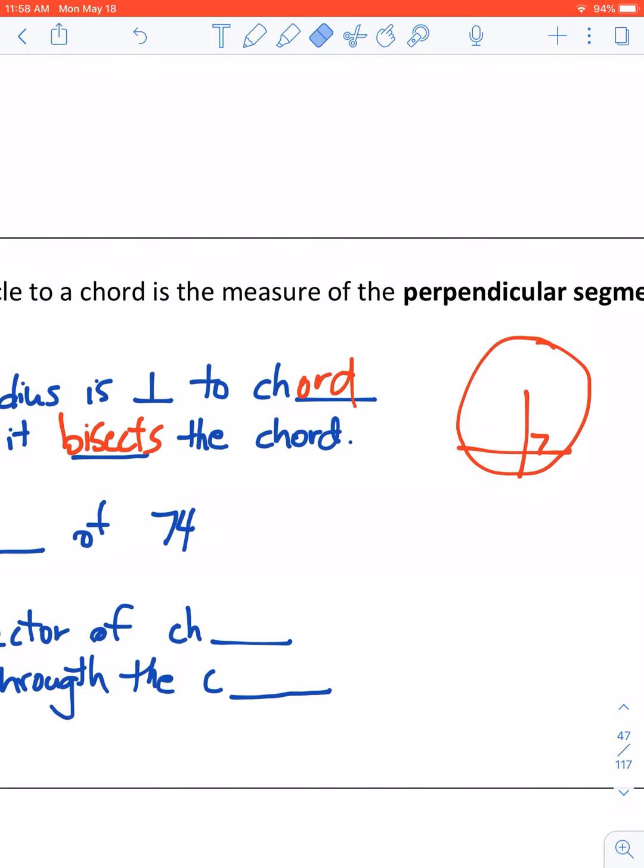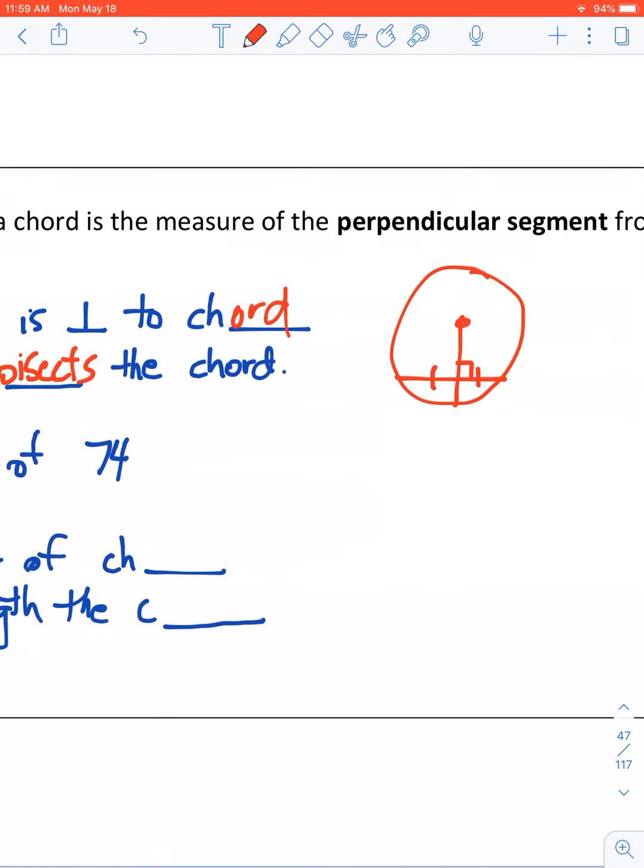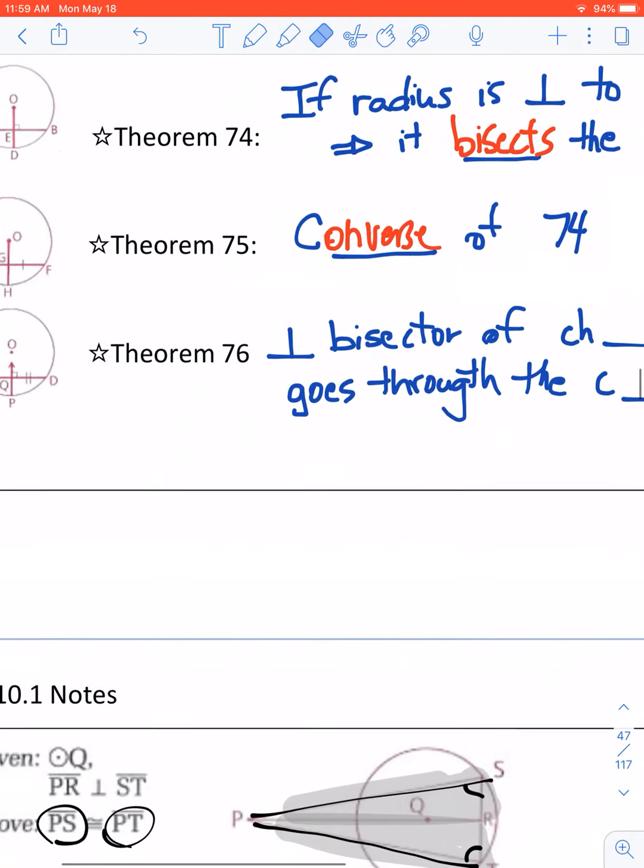Now vice versa, if you happen to know that the radius and the chord are bisected, so the chord is bisected by the radius, then you know it's also perpendicular. So the converse, you can flip it around. Now again, that only applies to chords which are not diameters. But obviously if you drew a diameter like this, you could bisect that diameter with that radius and you would still not be perpendicular. So it only applies to diameters.